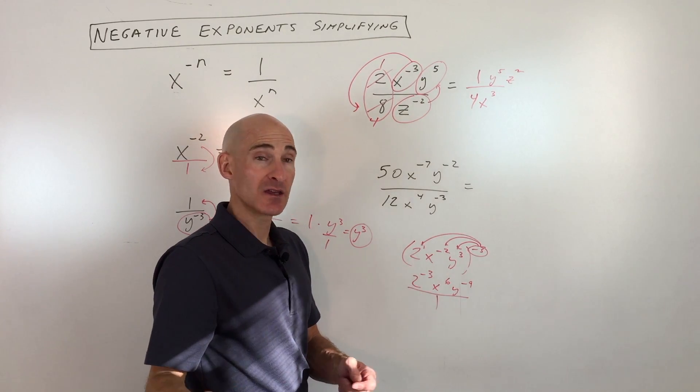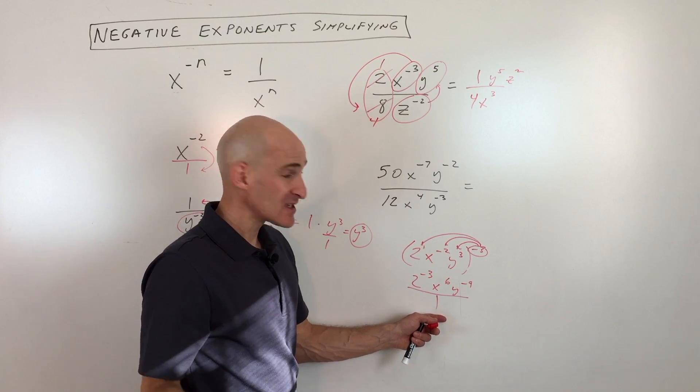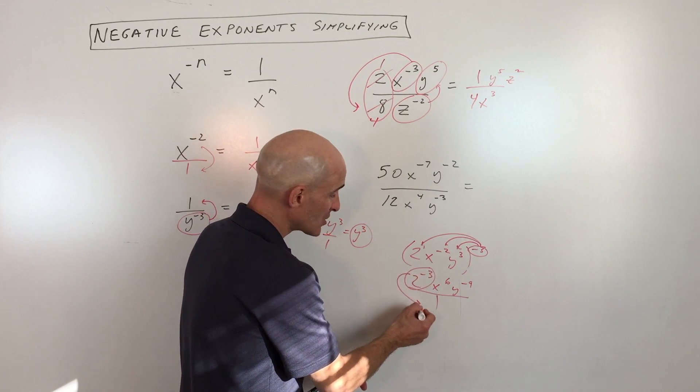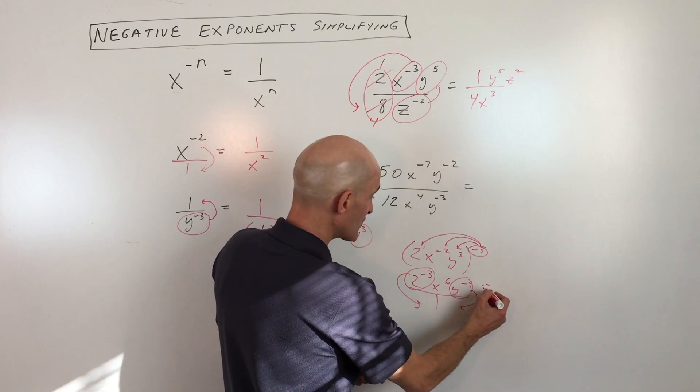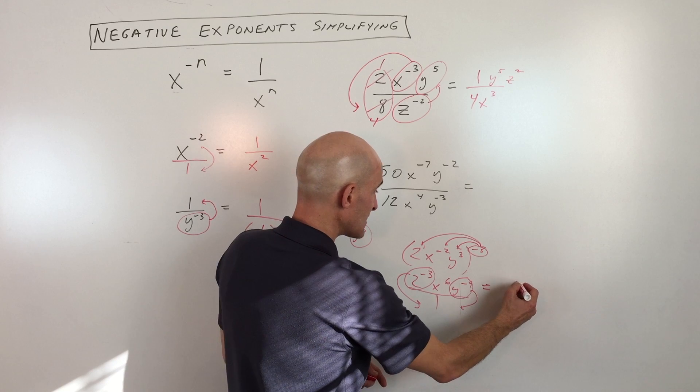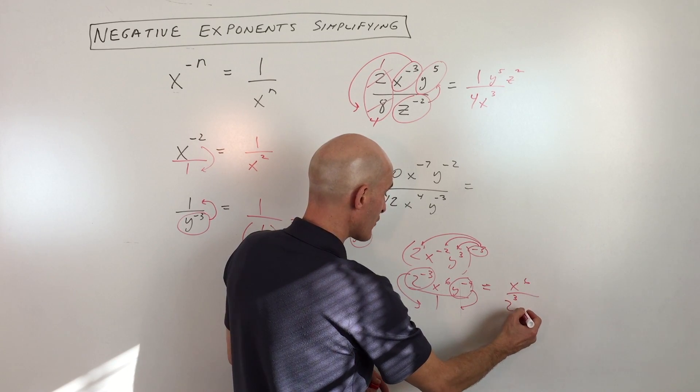Now all we have to do is think of that as being divided by 1. Anything over 1 or divided by 1 is itself. So now anything that has a negative exponent, we're just going to move it to the other side of the fraction bar and make it a positive exponent. So this is going to end up being x to the sixth over 2 to the third power y to the ninth power.